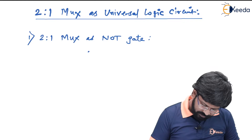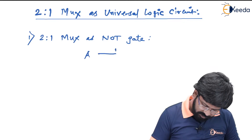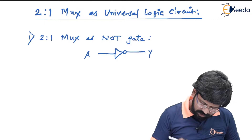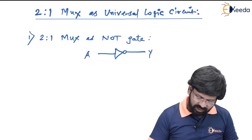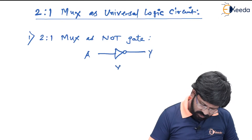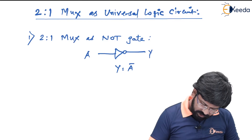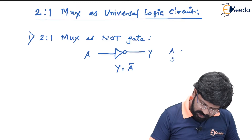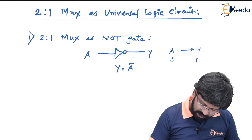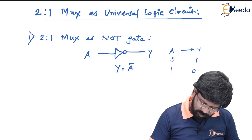My requirement is a NOT gate, which has only one input and one output. The relation between output and input is Y equal to A complement. Therefore, whenever A equal to 0 you must get Y value as 1, and for A equal to 1 you must get Y value as 0, which is complement of 0 and complement of 1.